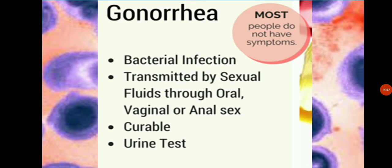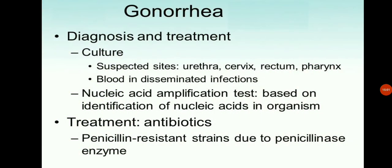In males, gonorrhea is diagnosed by examining discharge from the penis under the microscope. Gonorrhea can be quickly and easily cured if diagnosed early. A series of shots of penicillin is the usual treatment. Diagnosis methods also include culture of suspected sites such as the cervix, urethra, and pharynx, and nucleic acid amplification tests based on identification of nucleic acids in the organism. The treatment is antibiotics.